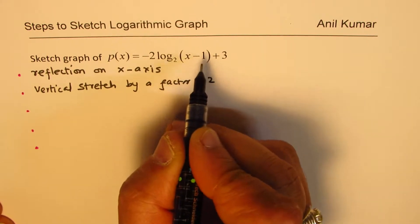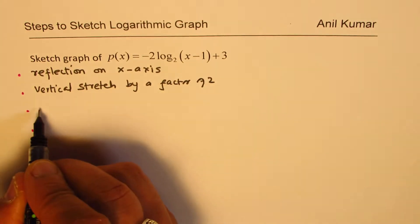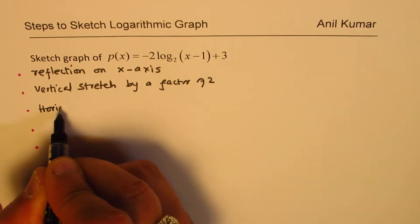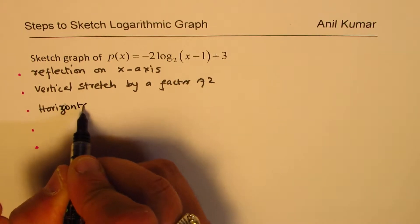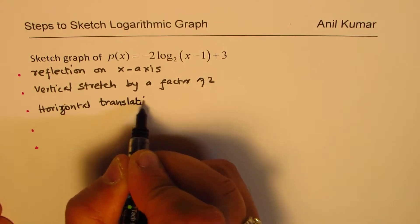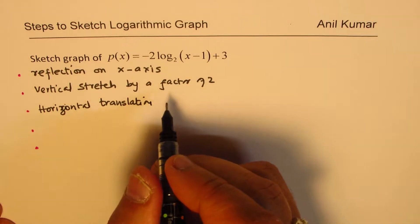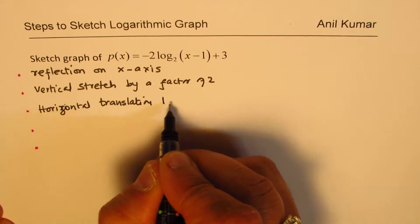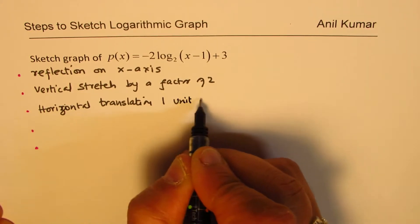Now negative and then 1. This 1 means what? Horizontal translation by how much? Just one unit. Which direction? Horizontal translation, 1 unit right.